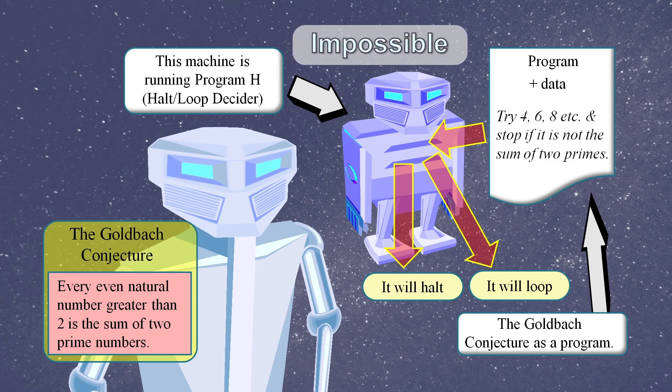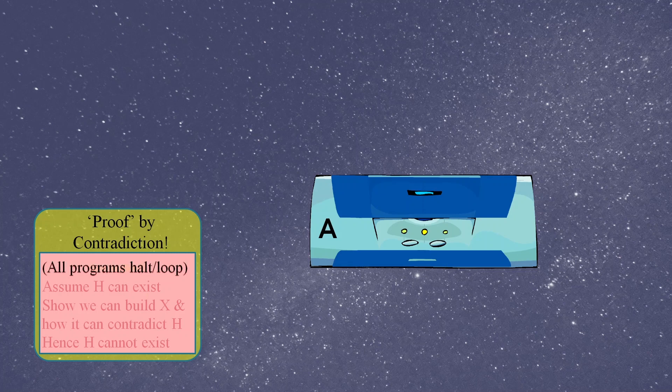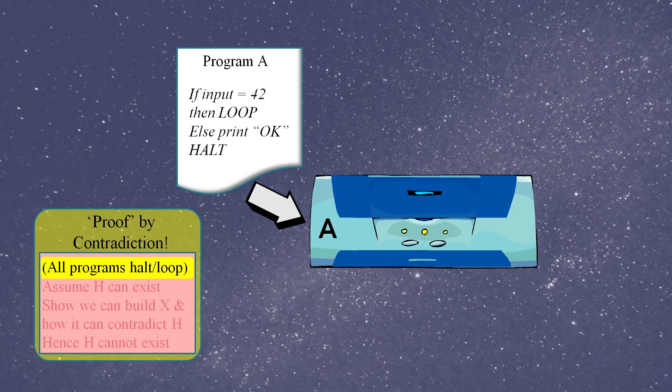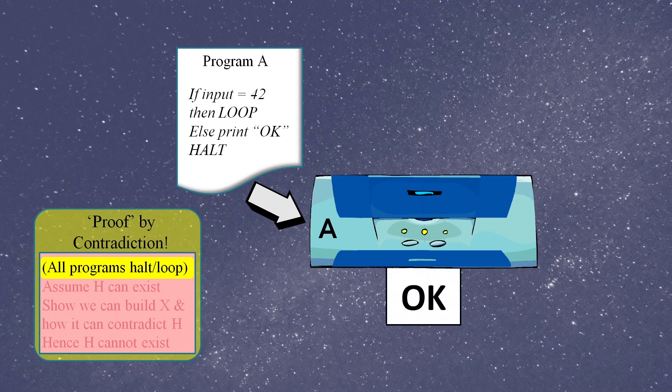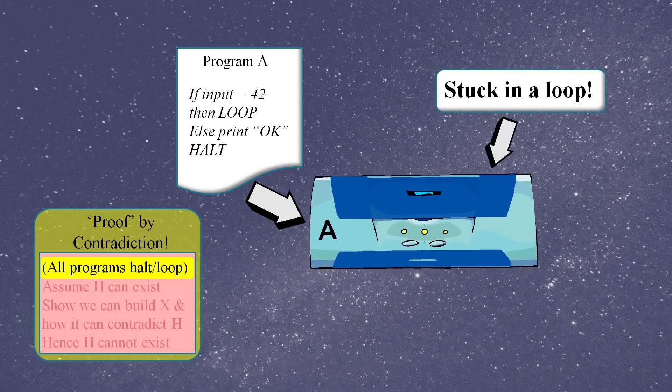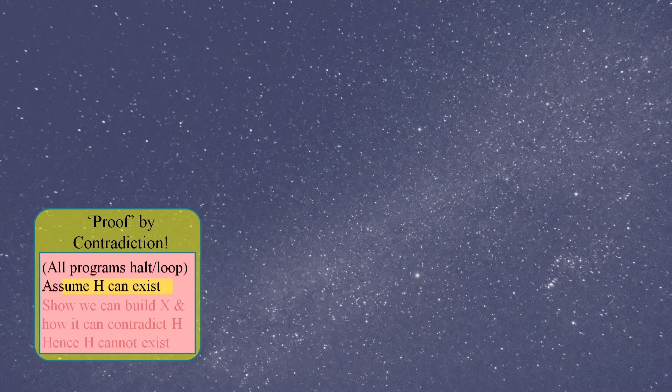But Alan Turing devised a proof from which he concluded that it was impossible to devise a halt or loop decider. His proof goes like this: It starts by claiming that all programs must either halt or loop. For example, if we've got a machine that runs program A which loops if its input is 42 but halts for all other inputs, then say we input number seven, it will print okay and stop. But if we input 42, it gets stuck in a loop and we're going to have to switch it off and on again. In the next stage, we assume that a halt loop detector program can exist.